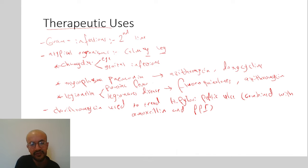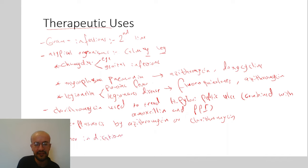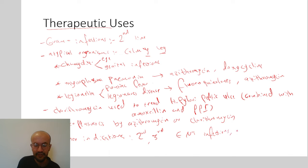Macrolides are also used to treat toxoplasmosis, using azithromycin or clarithromycin. Other indications include macrolides being used as second or third line in treating ENT infections, gonorrhea, and syphilis.